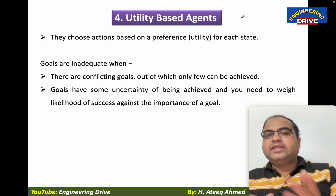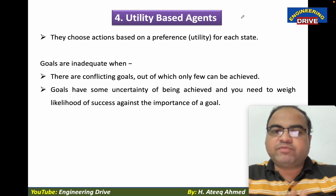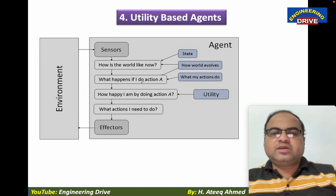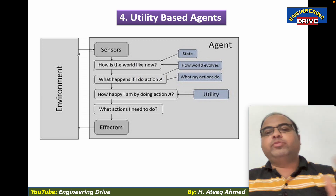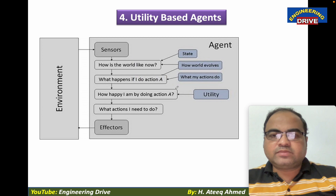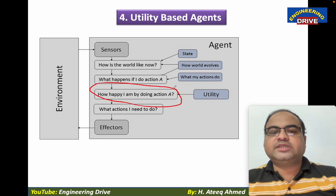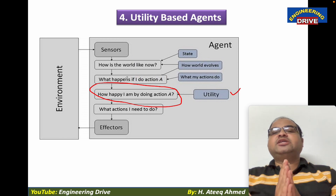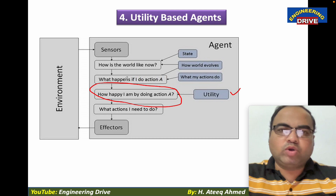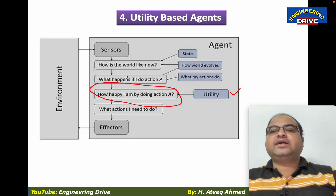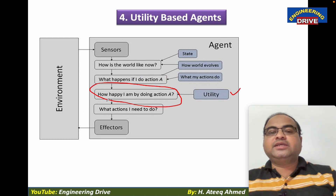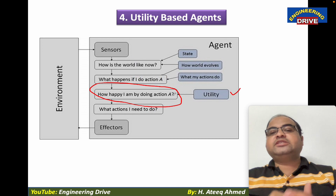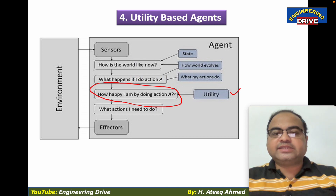Utility-based agents work in a dynamic way. In this diagram, we can see the same type of situation as in goal-based agents, but one thing added here is the utility component. In goal-based agents, the agent simply decides whether action A or action B will achieve the goal. But in utility-based agents, one more parameter is added: how happy am I by doing action A? If the agent is happy doing action A, only then will the agent generate the action through effectors.